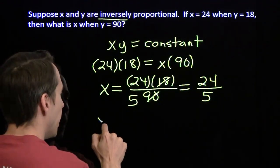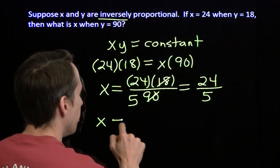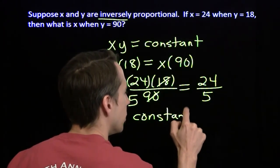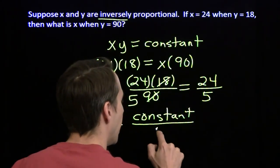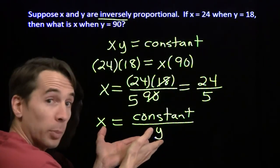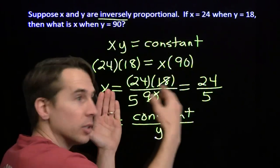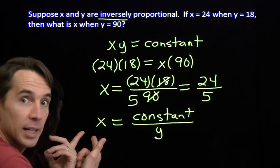We can also see this by dividing both sides by y. x is some constant divided by y. If we multiply y by 5, look what happens to the right-hand side. We're dividing the right-hand side by 5. We're dividing x by 5.